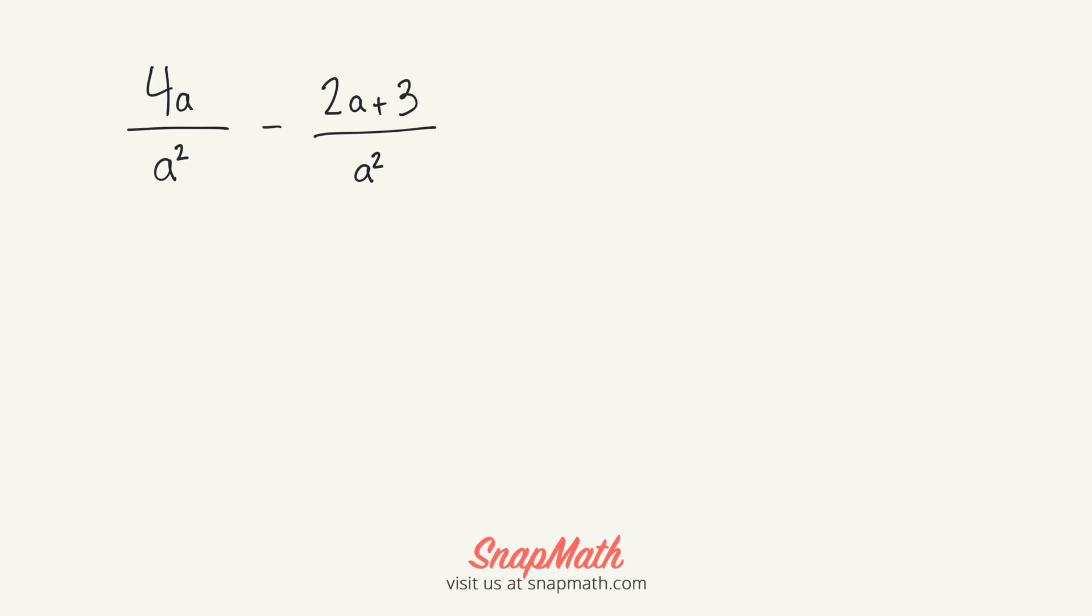So the first thing is, just like subtracting basic fractions, you need a common denominator. As you can see, a² and a² are common denominators. So we don't need to multiply either the numerator or denominator by anything. We can just simply subtract.